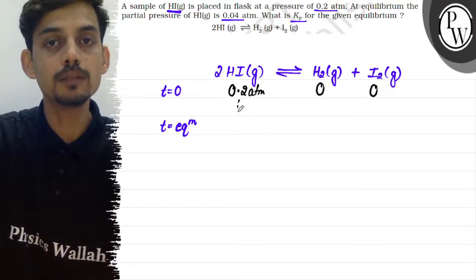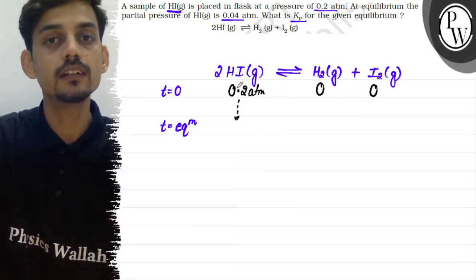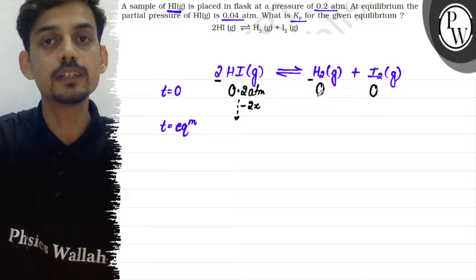At equilibrium, HI's pressure will decrease and we can assume that decrease to be 2x. So if pressure decreases by 2x here, then stoichiometrically, H2's pressure will increase by x and I2's partial pressure will also increase by x.